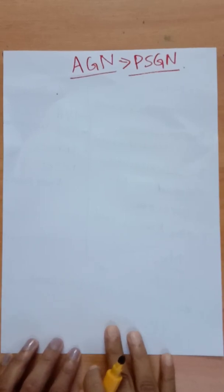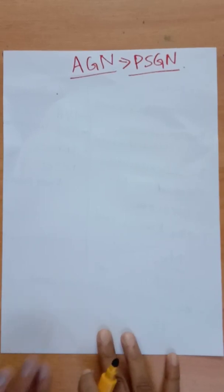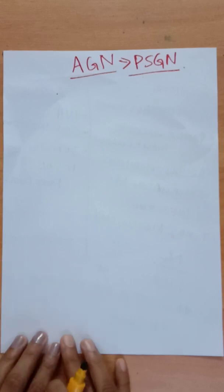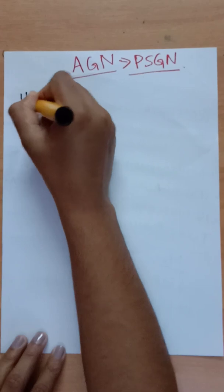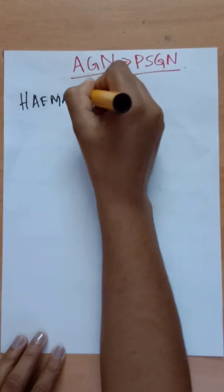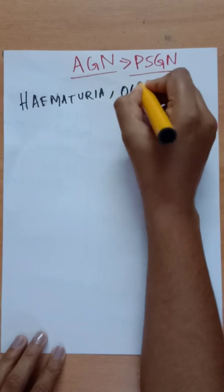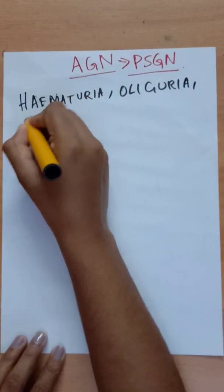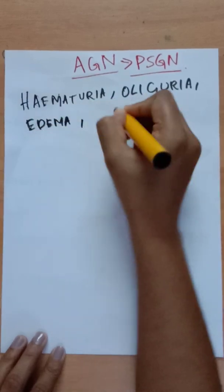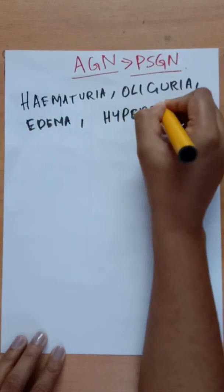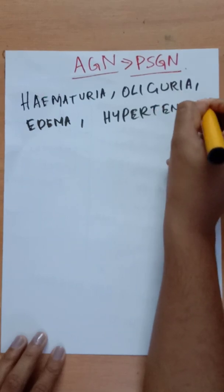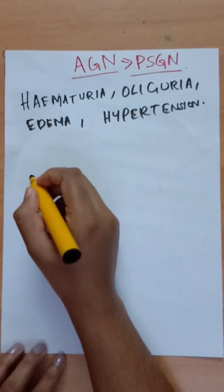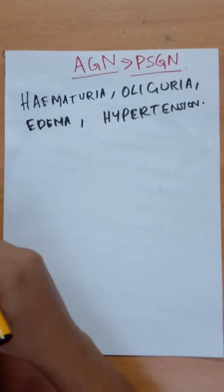We will discuss acute glomerulonephritis in children, the most common being post-streptococcal glomerulonephritis. Acute glomerulonephritis is characterized by abrupt onset of hematuria, oliguria, edema, and hypertension. Clinical severity varies — mild disease may go undetected, while severe cases present with anuria, hypertensive encephalopathy, and heart failure.